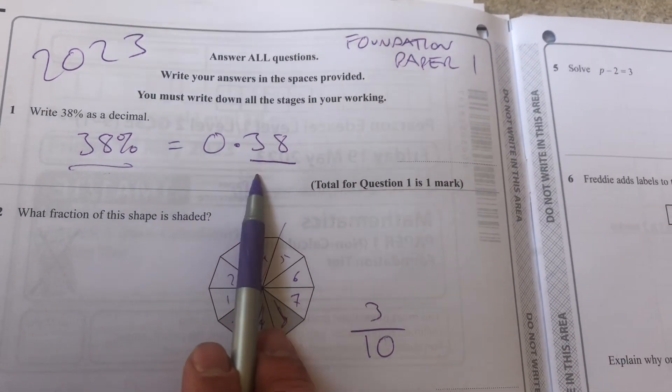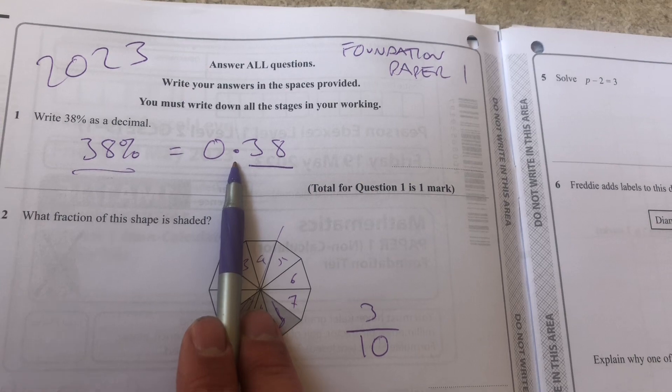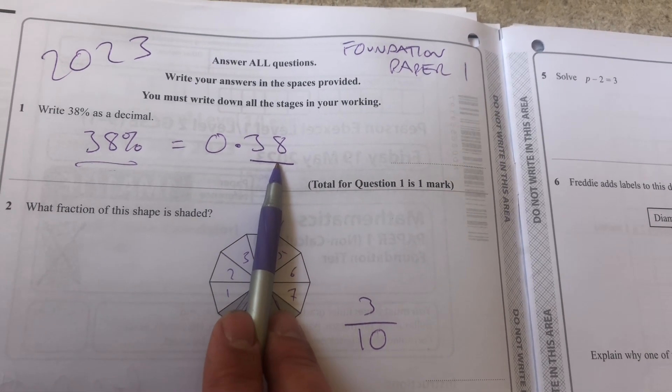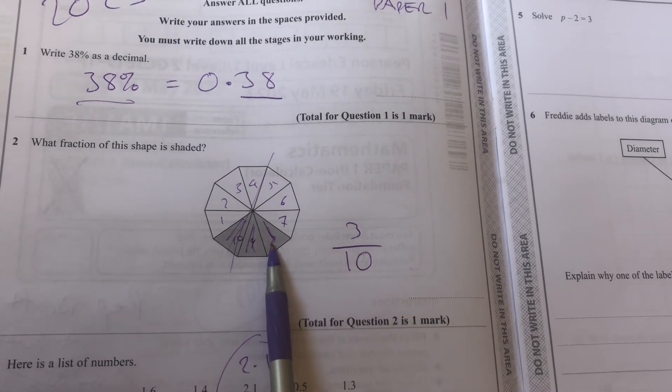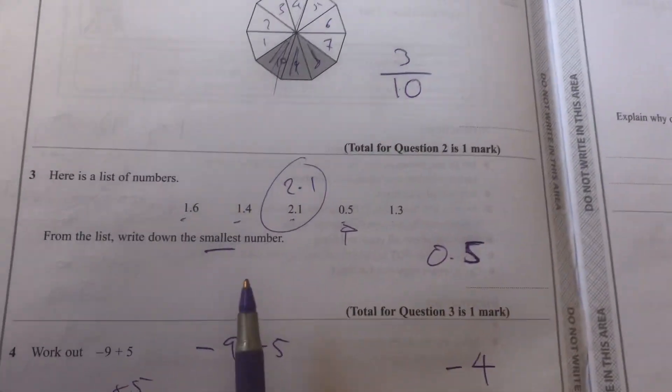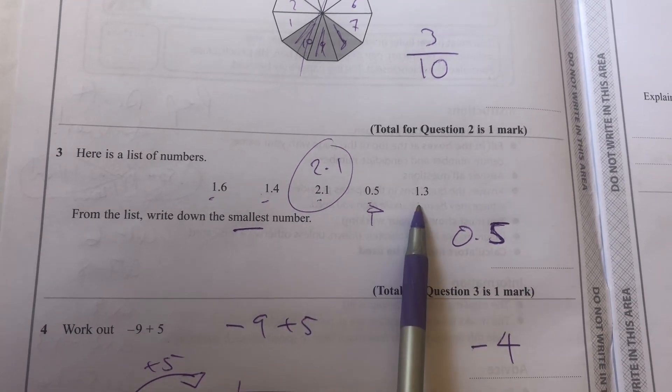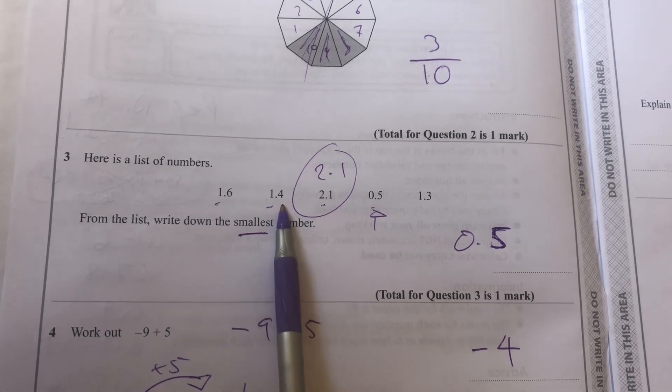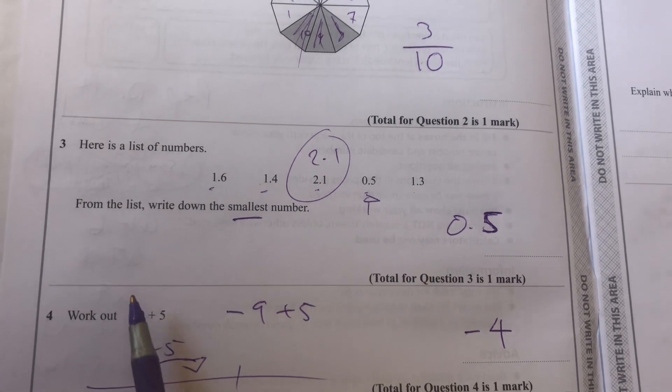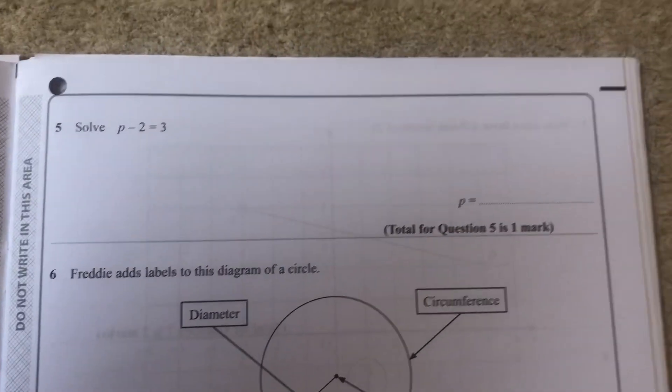Just quickly recapping: percentage to decimal - you move the numbers through the decimal place by 100. Fractions - the number of parts shaded out of the total. Smallest number - look at the first place value, which is the units. And use a number line for adding negative numbers.